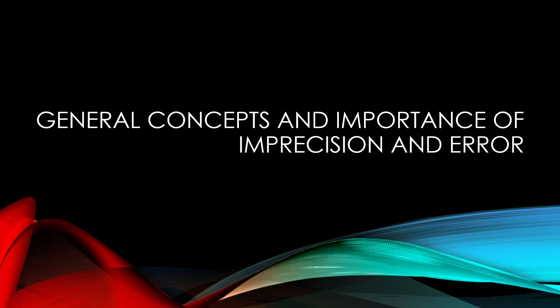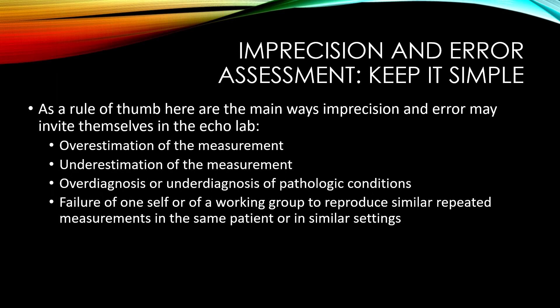Regarding general concepts and the importance of imprecision and error: while preparing this presentation, I thought about how to summarize the ways one can make errors in the echo lab. I think it boils down to four concepts: you may overestimate the measurement, underestimate the measurement, there can be over- or under-diagnosis of a pathologic condition, and there can be failure to reproduce similar repeated measurements in the same patient or similar settings.